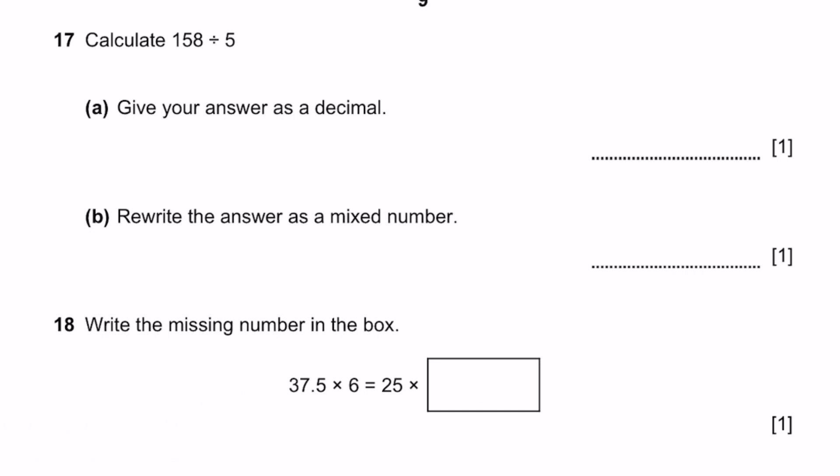Question 17. Calculate 158 by 5. Give your answer as a decimal. We get quotient 31, and then it'll be remainder 3 by 5. We just divide by 5, so we get 0.6. 31.6. Write as a mixed number. 31, 3 by 5.